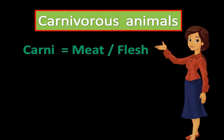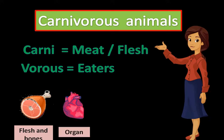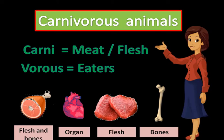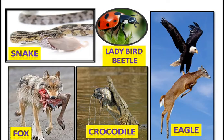Carni means meat or flesh. Vorous means eaters. So the animals which eat flesh and bones or organs or flesh itself of other animals are called as carnivorous animals, because those animals can be living or dead. Examples of a few carnivorous animals: snake, lion, tiger, leopard, ladybird, beetle, eagle, crocodile, fox etc.